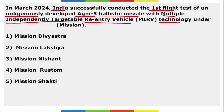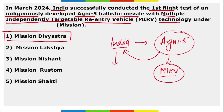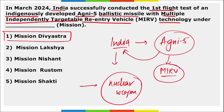Next: India successfully conducted the first flight test of the indigenously developed Agni-5 ballistic missile with Multiple Independently Targetable Re-entry Vehicle (MIRV) technology under Mission Divyastra. Agni-5 is India's ballistic missile, and it is equipped with MIRV technology — Multiple Independently Targetable Re-entry Vehicles. This mission, Mission Divyastra, is India's nuclear-capable missile test, and with this launch India entered a select group of nations globally that have MIRV capability.